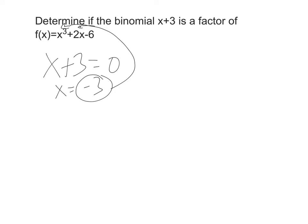Let's do both. If I plug it in, I have negative 3 cubed, which is negative 27, plus 2 times negative 3, which is negative 6, minus 6. That's not going to be 0, it's negative 39.